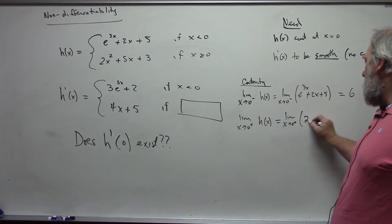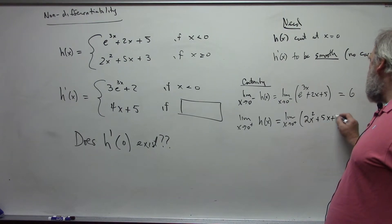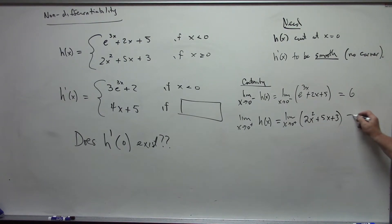In this case, the rule is 2x squared plus 5x plus 3, and that is 3. And so therefore, it is not continuous. Therefore, the derivative does not exist.